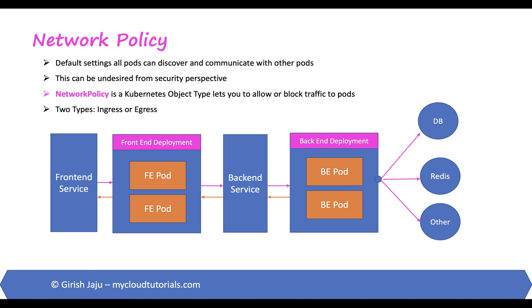Network policy is one of the objects in Kubernetes that lets you allow or block traffic to the pods — it lets you control what goes in and what kind of traffic goes out. There are two types: ingress and egress. Ingress network policy controls the incoming traffic to the pod, whereas egress network policy controls the outgoing traffic from the pod.